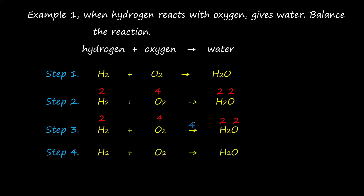The fourth step is to divide the LCM by each total valence number to obtain the coefficient for each reactant and product, and place the obtained coefficient in front of the respective formula. So 4 divided by 2 equals 2 — write coefficient 2 for hydrogen. 4 divided by 4 equals 1 — no need to write 1, ignore that. Then 4 divided by 2 equals 2, and also 4 divided by 2 equals 2 — write 2 here.